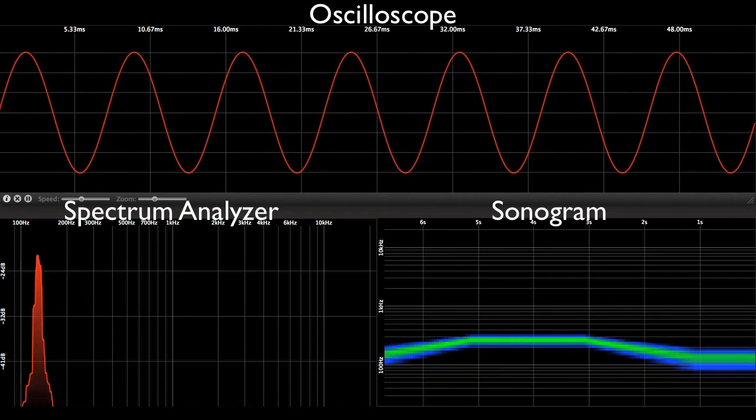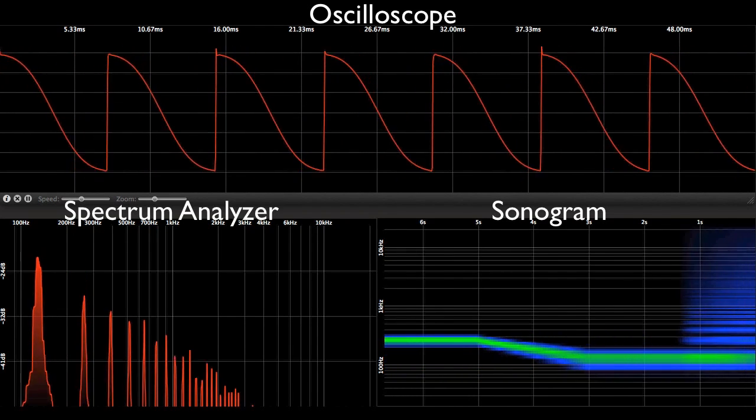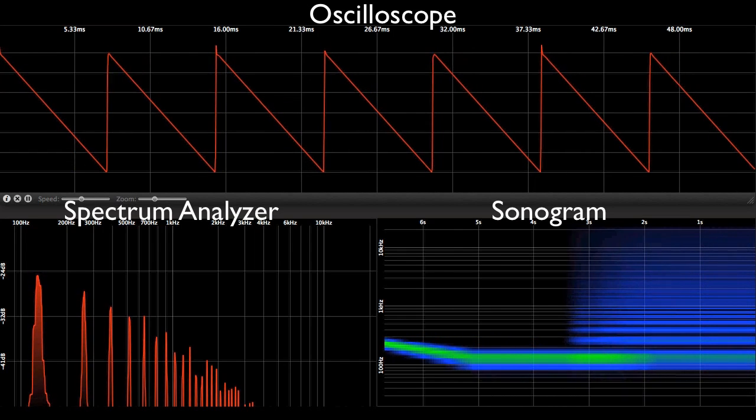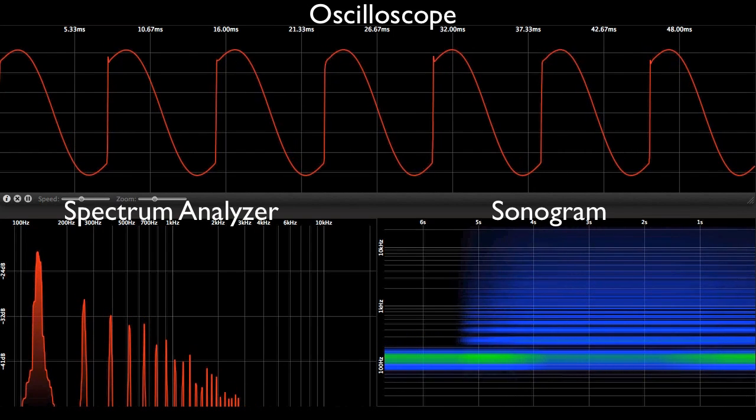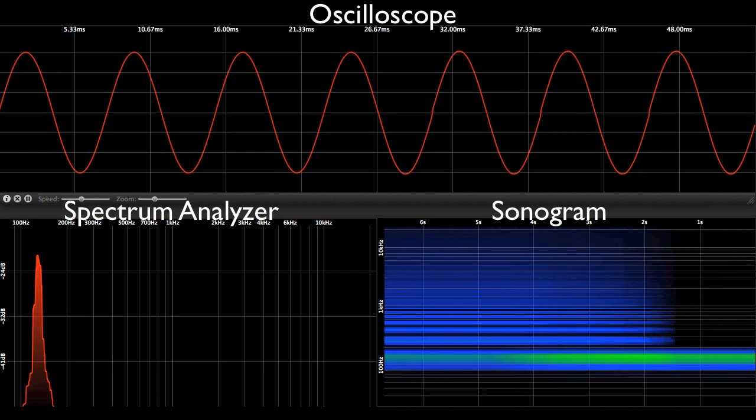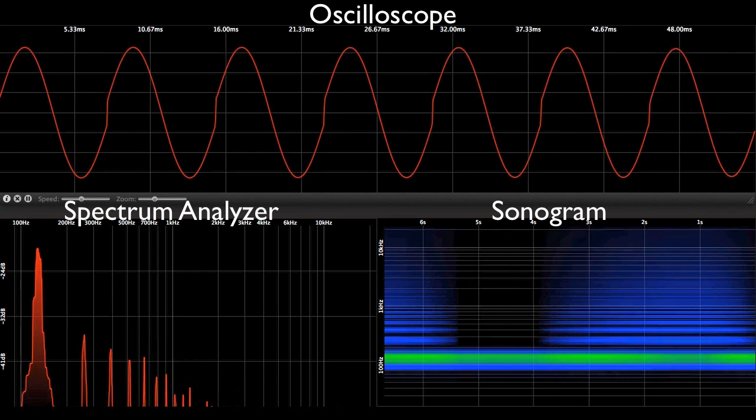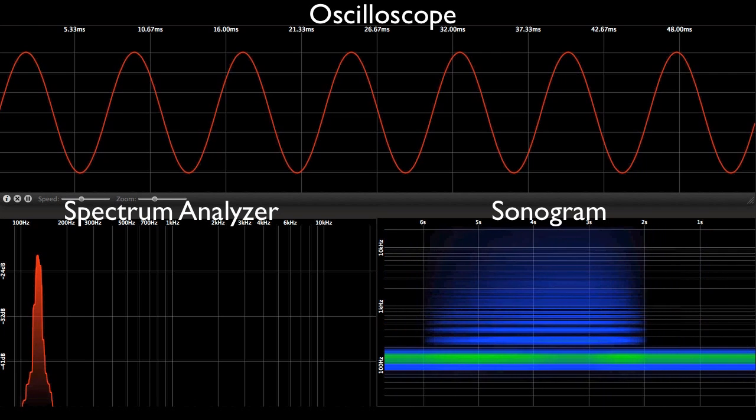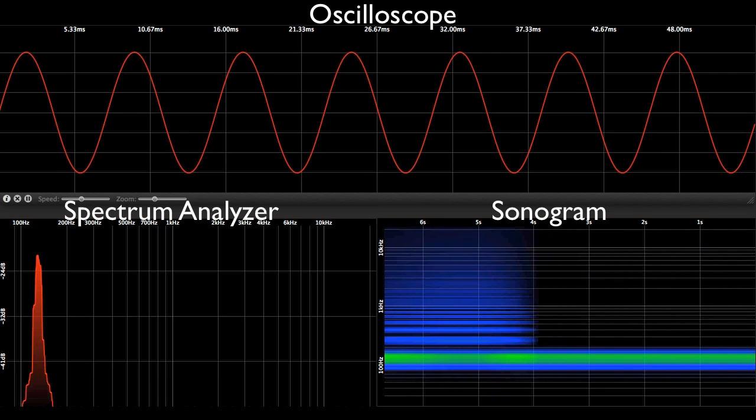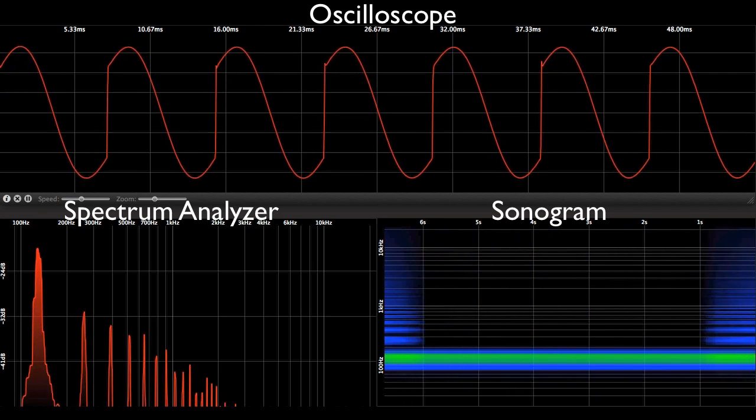If I change timbre, we see it as a change in wave shape in the oscilloscope, we see additional energy at additional frequencies shown in the spectrum analyzer, and we see additional lines shown in the sonogram display. Remember, those additional energies are called harmonics, and they're integer multiples of the fundamental frequency.